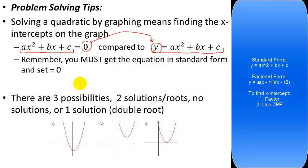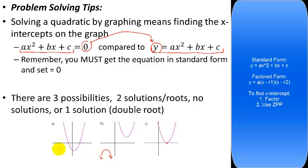Graphically there are three possibilities: the parabola could open upward with its vertex below the x-axis, giving two solutions; it could have its vertex above the axis, giving no solutions; or it could sit perfectly on the axis, giving that double root — one answer that occurs twice mathematically. All three cases also apply to downward-opening parabolas. What matters is how many times the parabola crosses the x-axis.